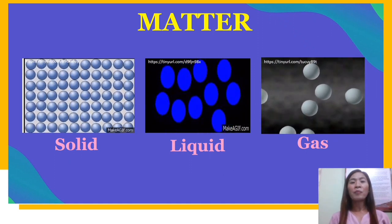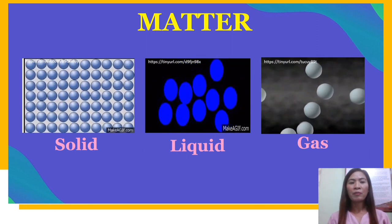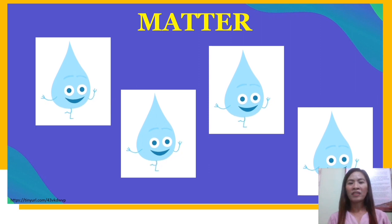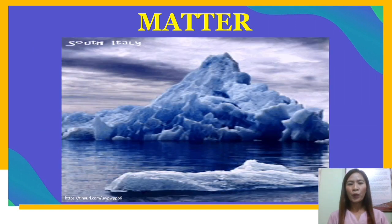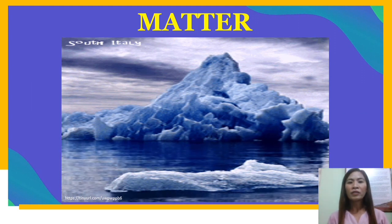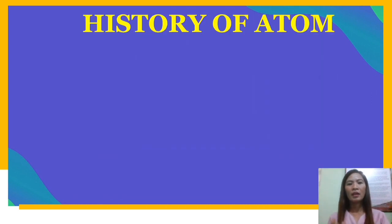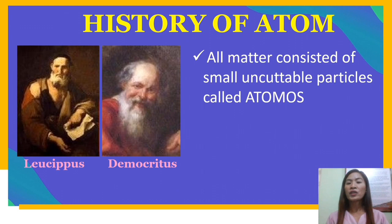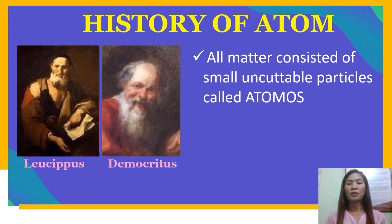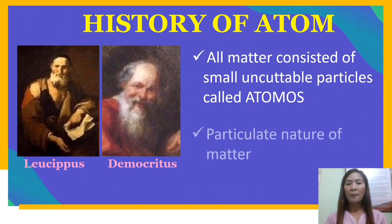Matter can be traced to the nature of particles composing them — the particles of solid, liquid, and gas. One example of matter noted for its variety in physical form is water. The iceberg, the ocean water, and the vapor in the sky are all considered water, but they are at different states. It was the Greek philosophers Leucippus and Democritus, at the 5th century BC, who had an idea that all matter consisted of small uncuttable particles called atomos, later known as atoms. All forms of matter are made up of atoms that are in constant random motion. Scientists call these characteristics the particulate nature of matter.